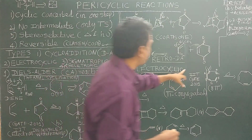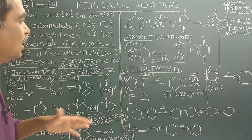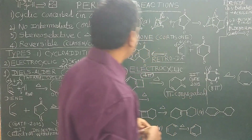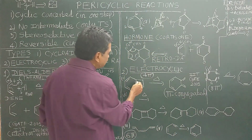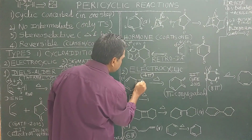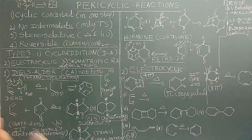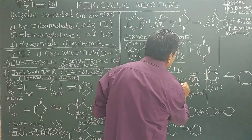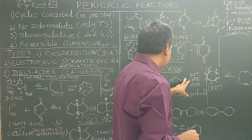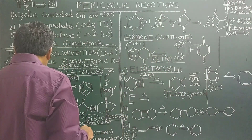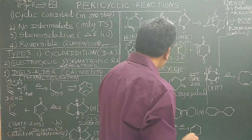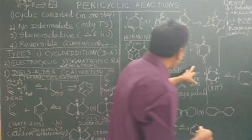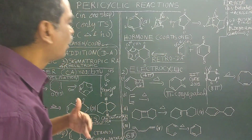Now let us see the second type: electrocyclic reactions. Electrocyclic reactions are very important. For example, a question was asked in IIT-JEE 2001. This compound on heating gives a product — you need to understand how the electrons are reorganized, how the sigma bonds and pi bonds are reorganized. Pi-conjugated compounds only will undergo electrocyclic reactions — specifically pi-conjugated organic compounds.